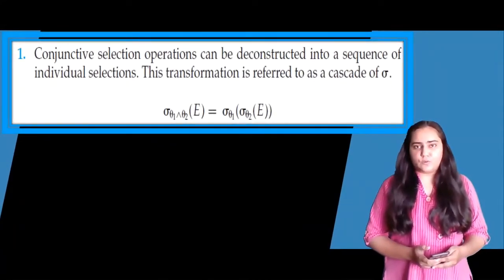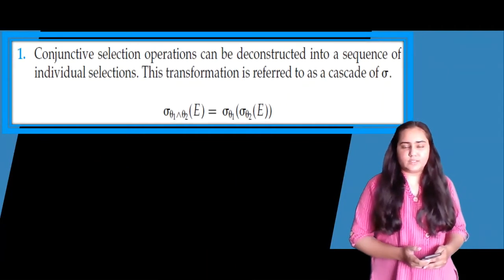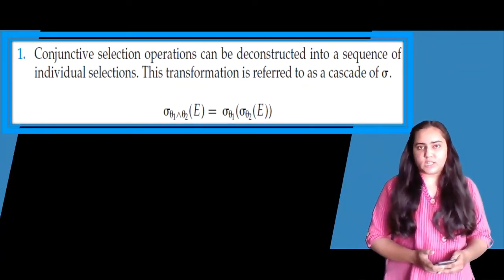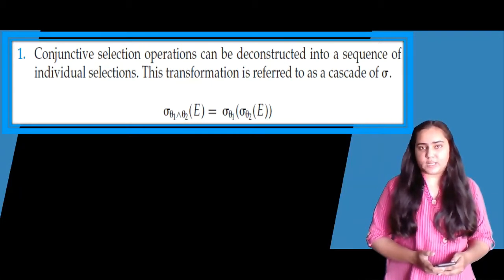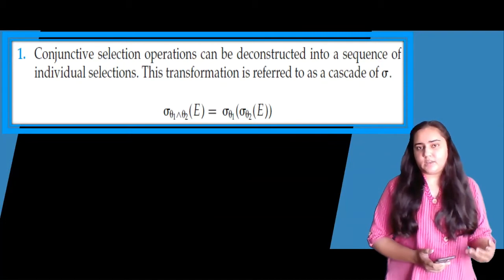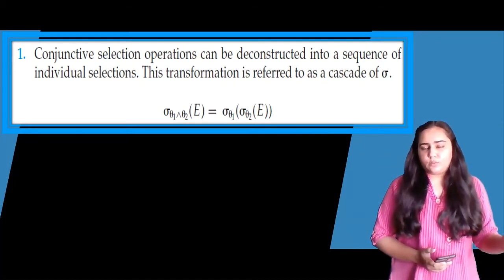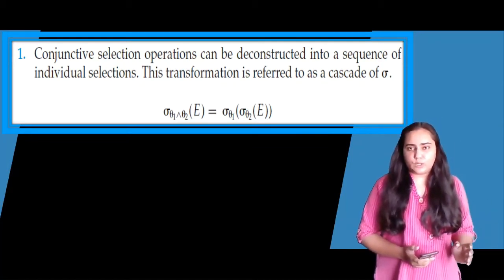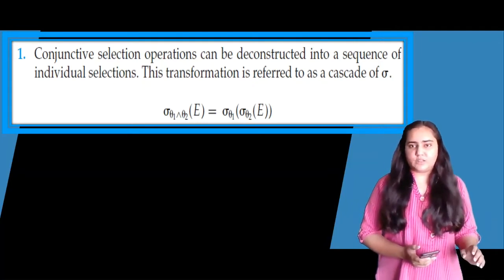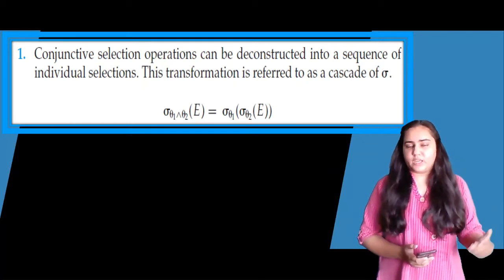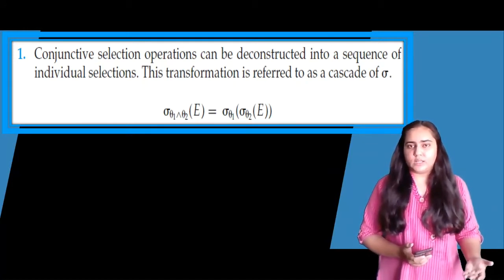The first rule is very simple. It says that conjunctive selection operations can be deconstructed into a sequence of individual selections, and this transformation is known as a cascade of sigma. All the operations and rules explained here are in terms of relational algebra operations, because we cannot write them in SQL since SQL does not show procedure.